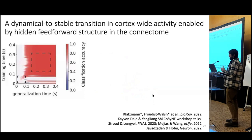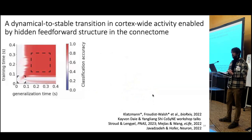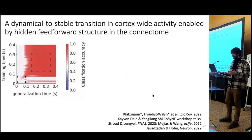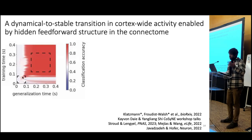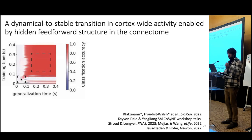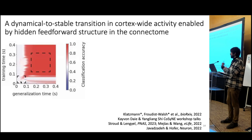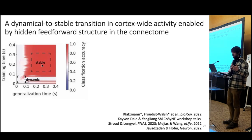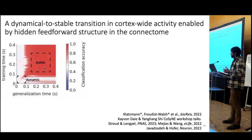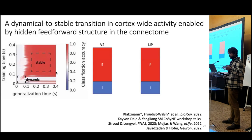We also looked at stability and dynamic coding within individual trials using a cross-temporal decoding technique on our network. The idea is to understand whether the same activity pattern across cortex that predicts perception early in a trial also predicts it at other time points. A diagonal line of high classification accuracy indicates a dynamic code, whereas a red square indicates stable coding — you can train at one time point and decode at another, meaning the neural representation is consistent over time. We actually observed this dynamic-to-stable transition in coding in our simulations, and we think we understand why.